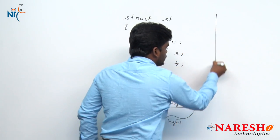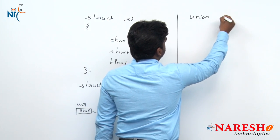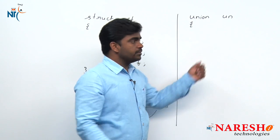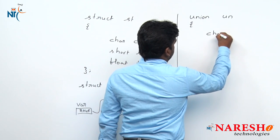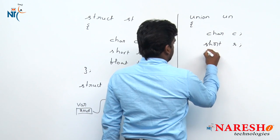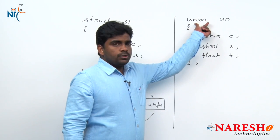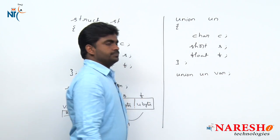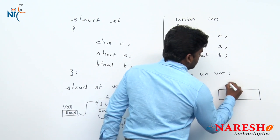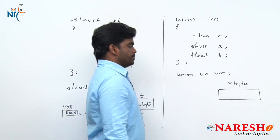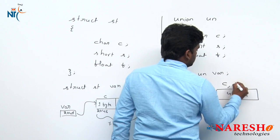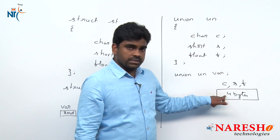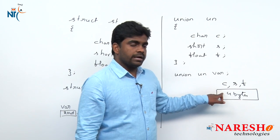But in case of union, that is not possible. We are declaring a union type variable. First the union definition is important. Suppose here we are defining one union with the same variables: one is a character type variable, one is a short type variable, and one is a float type variable. Now we are declaring a variable for this union. Variable name 'VAR' we are giving. VAR gets memory allocation — but how many bytes of memory will be allocated? Only 4 bytes of memory will be allocated, for C, for S, and for F. All three variables are sharing the same memory location.